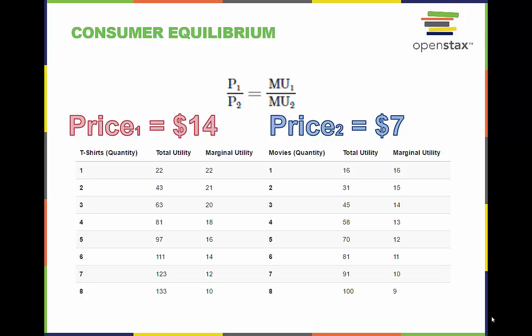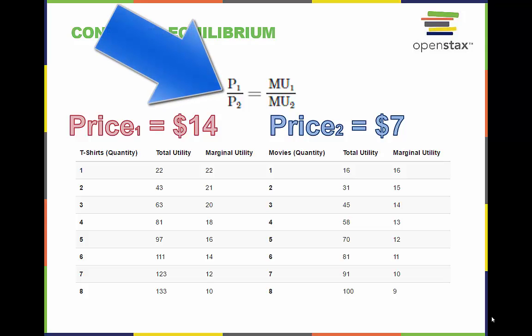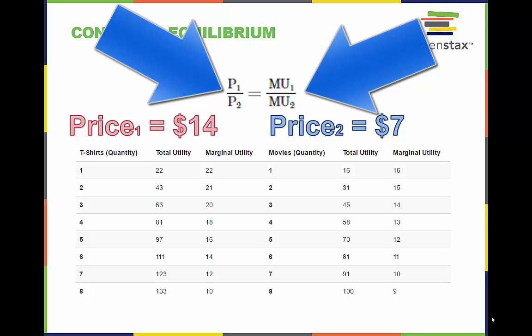Another way that might be more intuitive to approach utility maximization is to use the consumer equilibrium approach. This approach asserts that the ratio of the prices for the products — in this case t-shirts and movies — is equal to the ratio of the marginal utilities at the point where utility is maximized, which is point S on the budget constraint line.